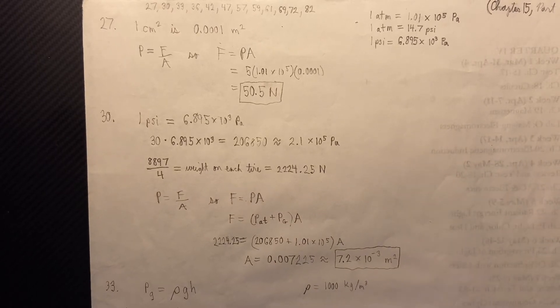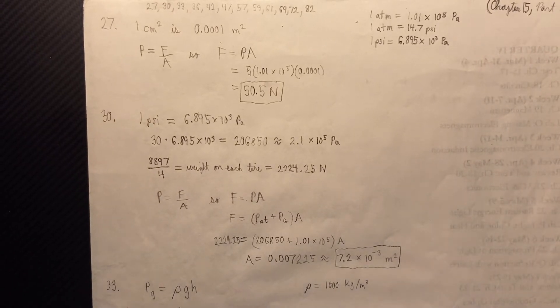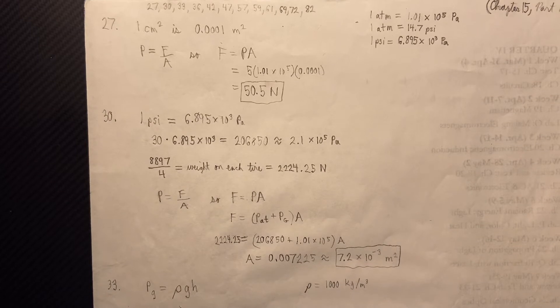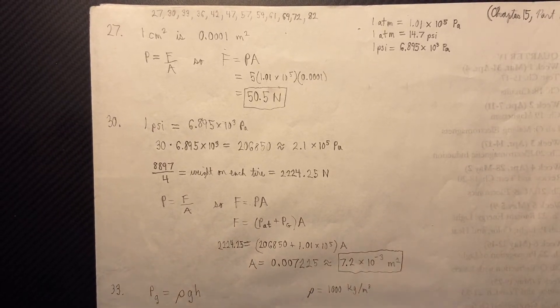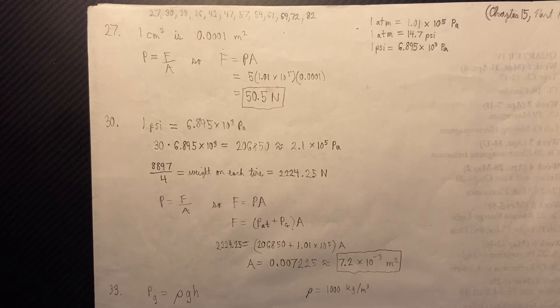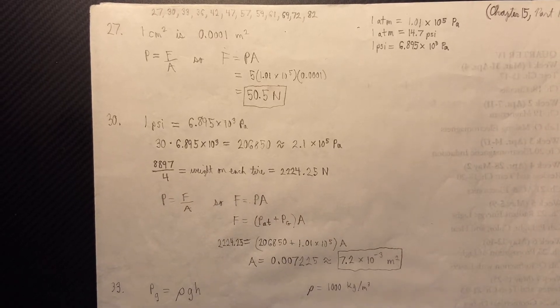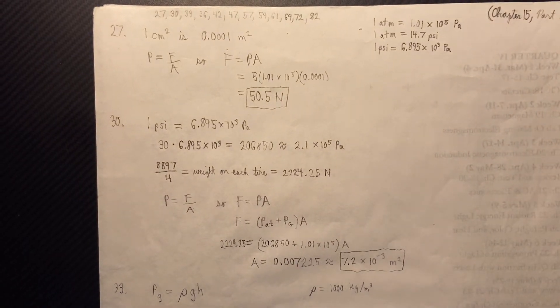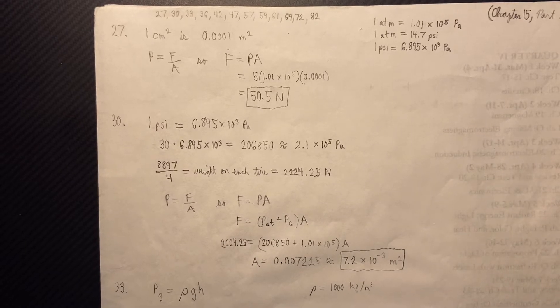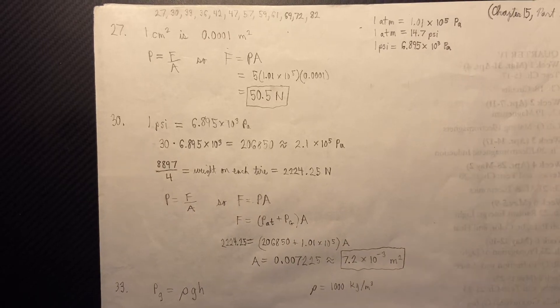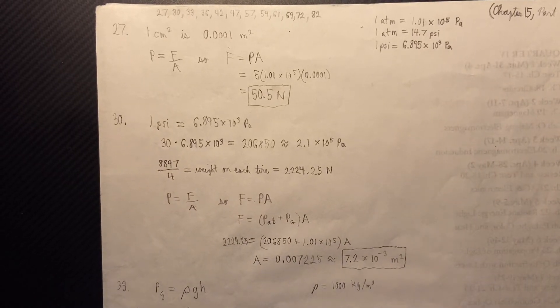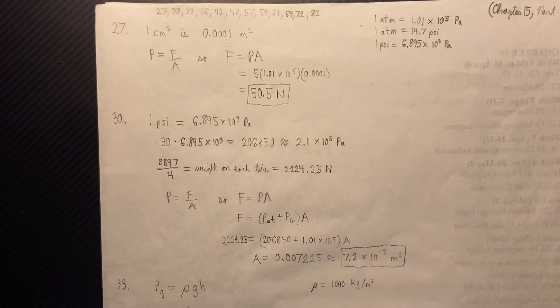So we know that one square centimeter is 0.0001 square meters. And if you want to review when you go from one square unit to another, or one cubic unit to another, we did a little bit of that in Chapter 1. Then, P equals F over A, so F equals PA, and that means our force is 50.5 Newtons.